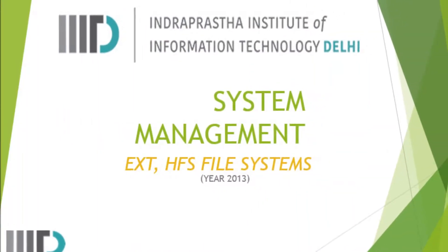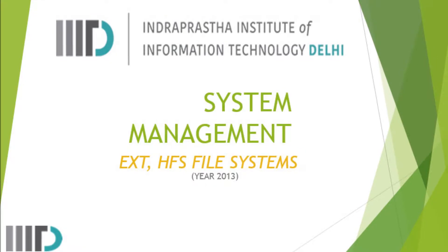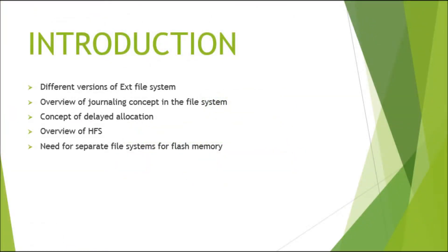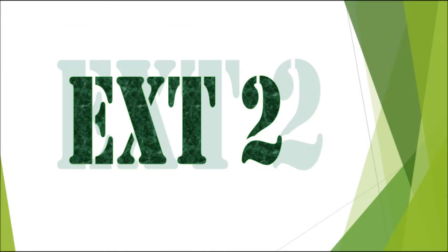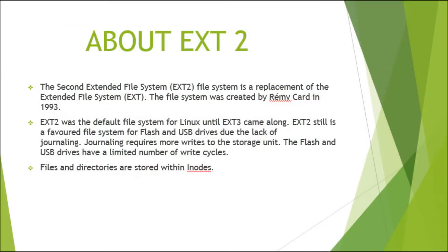Introduction to ext and HFS file systems. ext2, the second extended file system, is a replacement of the extended file system. It was created by Remi Card in 1993 and was the default file system for Linux until ext3 came along. ext2 is still a favorite file system for flash and USB drives due to lack of journaling, as journaling requires more writes to the storage unit.